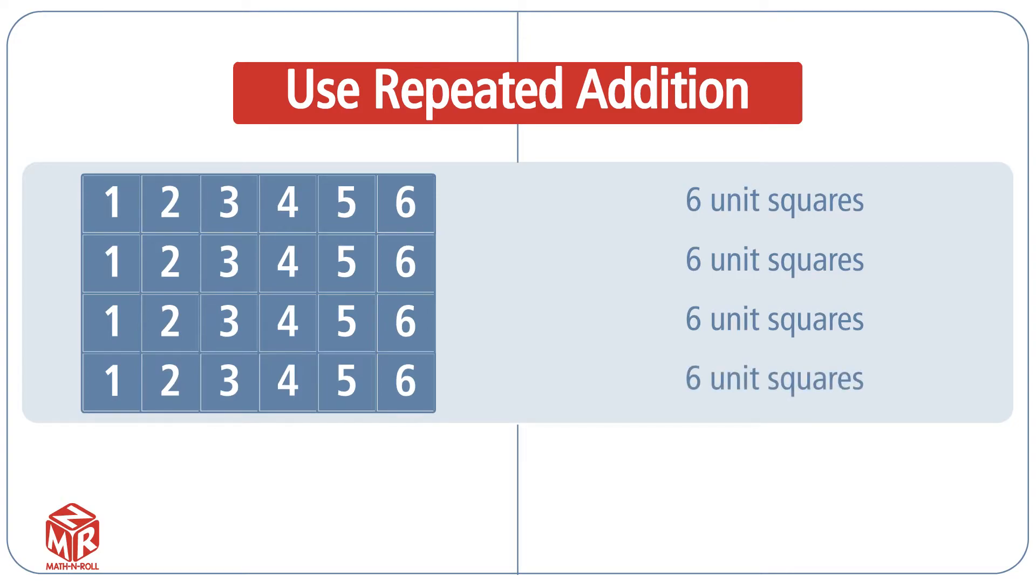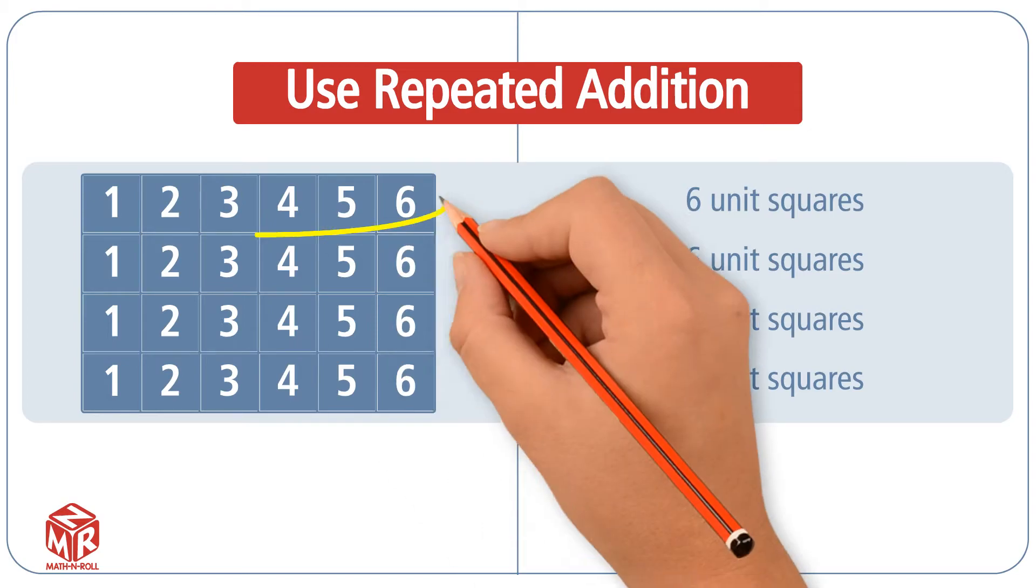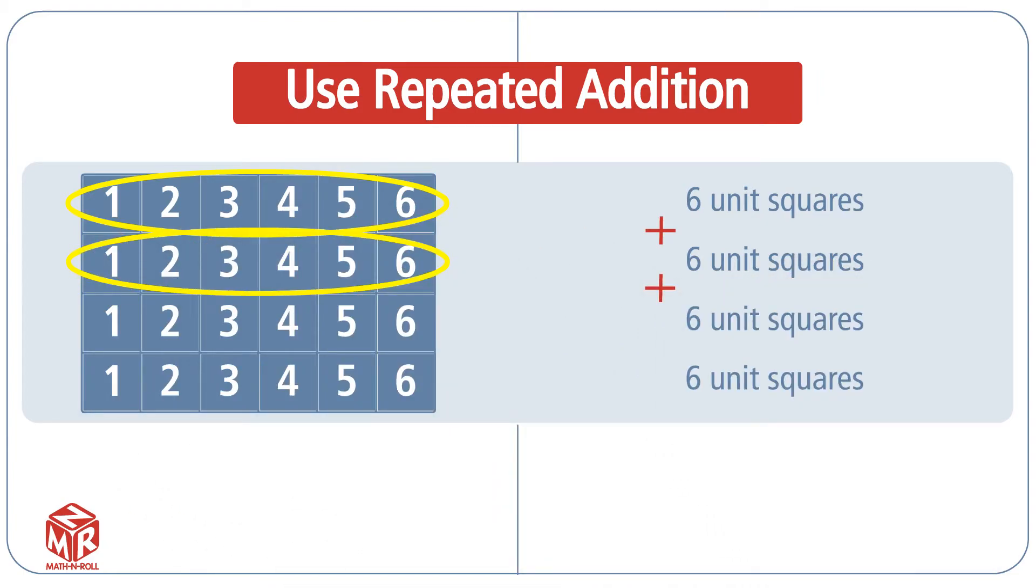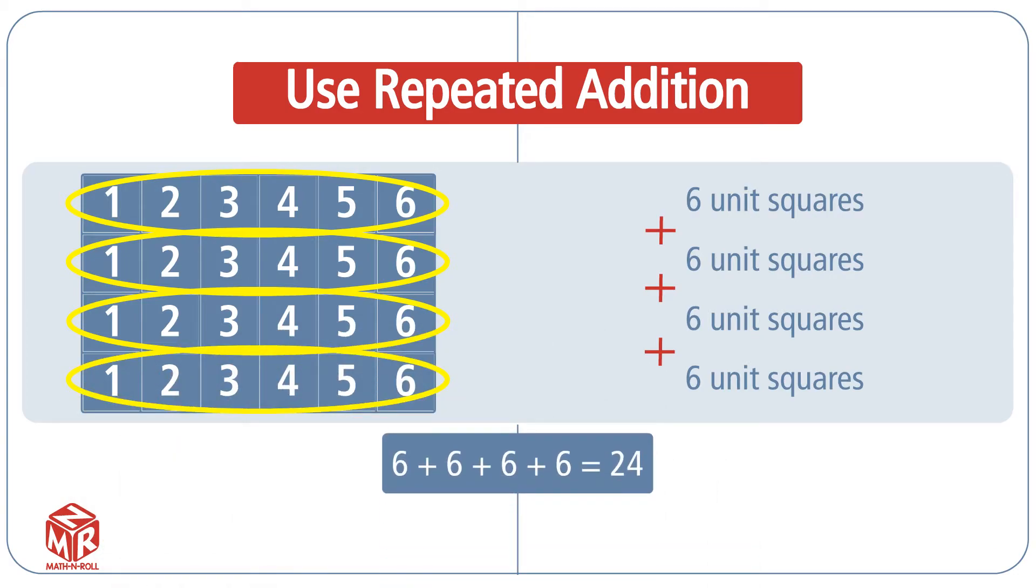We have 4 rows of 6. So to find the area, we add 6 four times. 6 plus 6 plus 6 plus 6 equals 24. So the area is 24 unit squares.